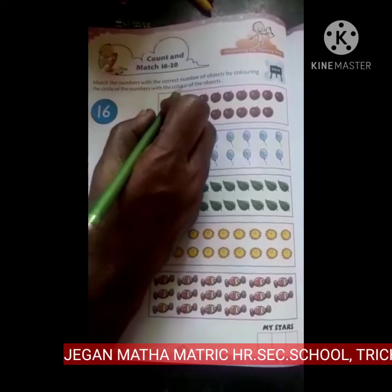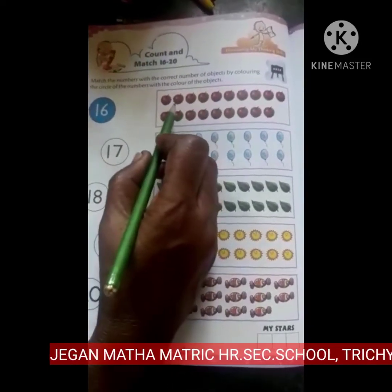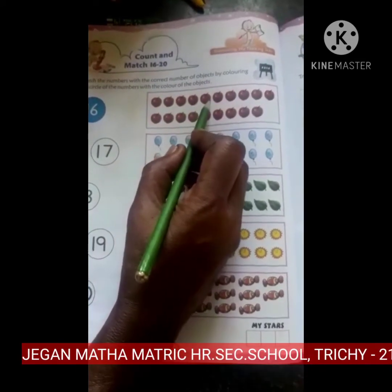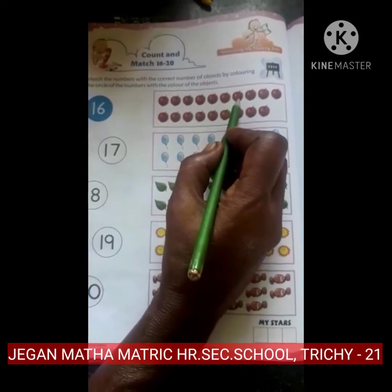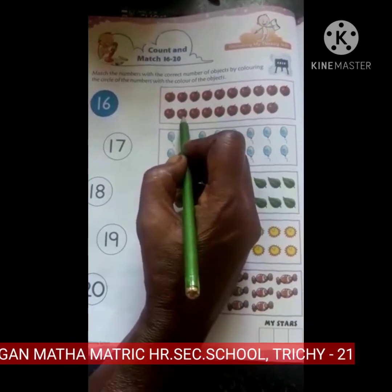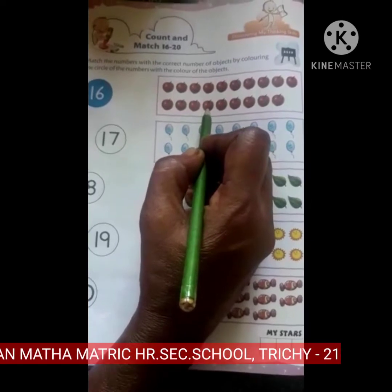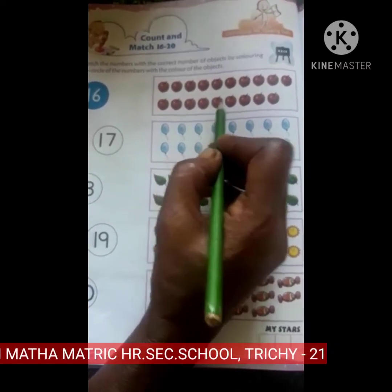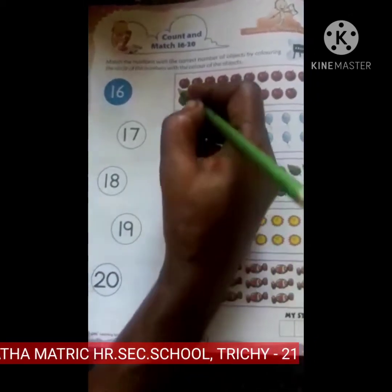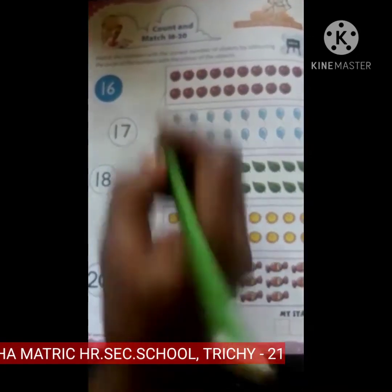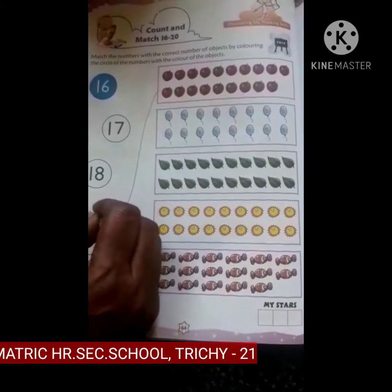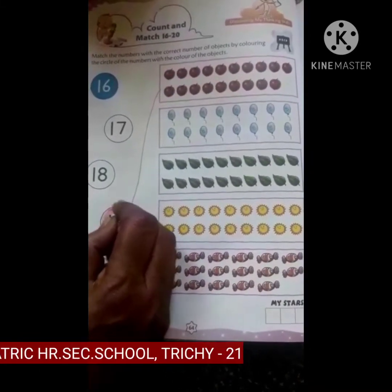Apples: 1, 2, 3, 4, 5, 6, 7, 8, 9, 10, 11, 12, 13, 14, 15, 16, 17, 18, 19. Here is 19. What color is the apple? The apple is red, so we have to color the circle red.